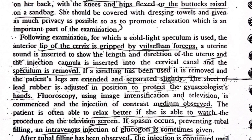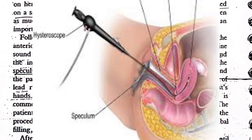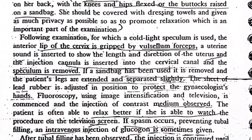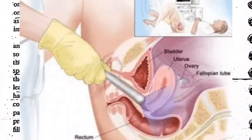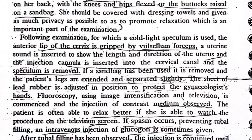A uterine sound is inserted to show the length and direction of the uterus, and the injection cannula is inserted into the cervical canal; the speculum is then removed. If a sandbag has been used, it is removed and the patient's legs are extended and separated slightly. The sheet of lead rubber is adjusted in position to protect the gynaecologist, and fluoroscopy using image intensification and television is commenced. The injection of contrast medium is observed. The patient is often able to relax better if she is able to watch the procedure on the television screen. If spasm occurs preventing tubal filling, an intravenous injection of glucagon is sometimes given.